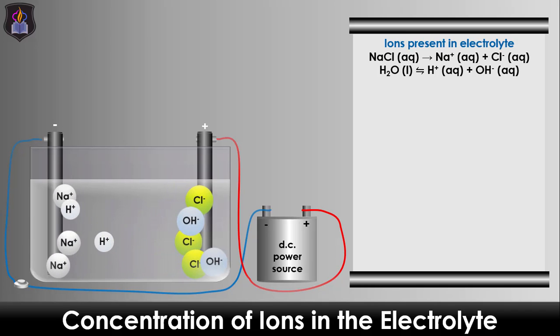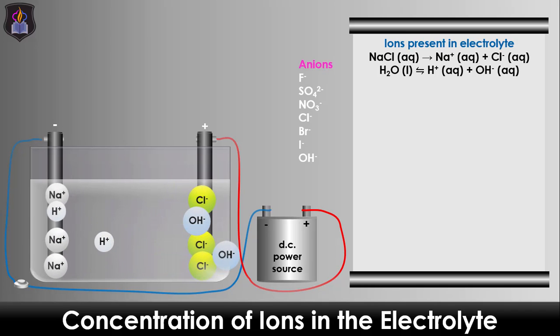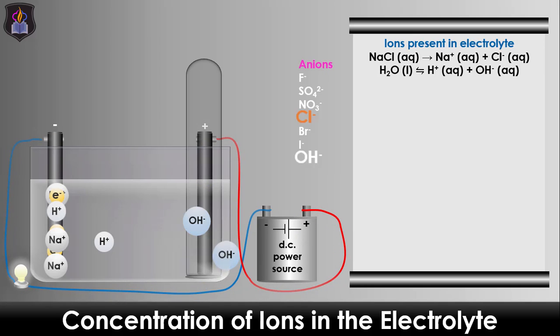At the anode, the chloride and hydroxide ions compete for discharge, and the chloride ion is preferentially discharged due to its higher concentration. The chloride ions undergo oxidation to form chlorine gas, liberated as a greenish-yellow gas at the anode.